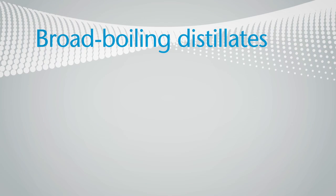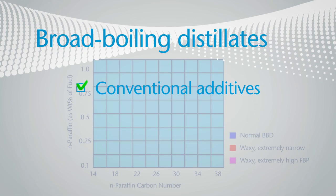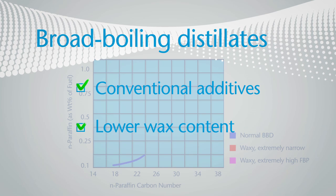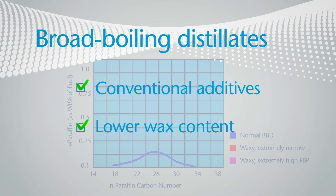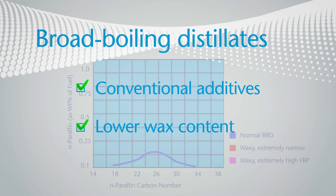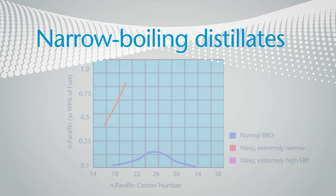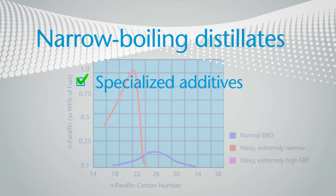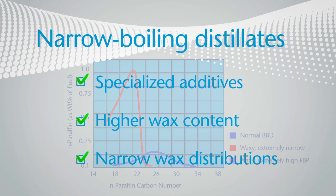Broad boiling distillates are generally easier to treat with conventional additives, as they generally have a slow wax precipitation rate. Narrow boiling distillates often require specialized additives designed to deal with narrow wax distributions.